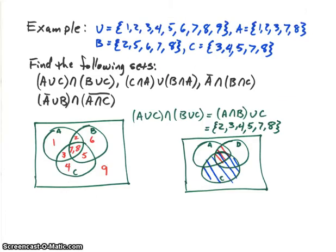Let's look at an example using some of these properties. The universal set includes all integers from 1 to 9. Set A has elements 1, 2, 3, 7, and 8. B has 2, 5, 6, 7, 8. And C has 3, 4, 5, 7, 8.